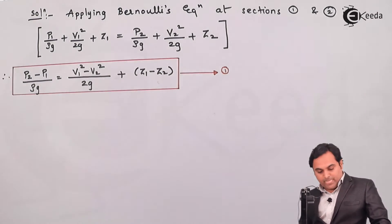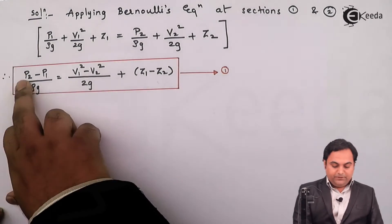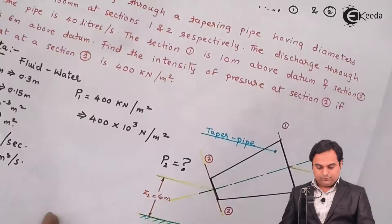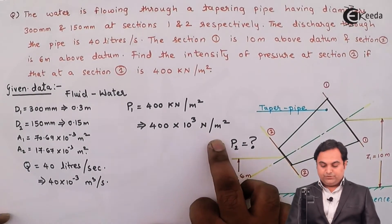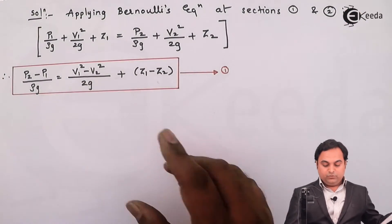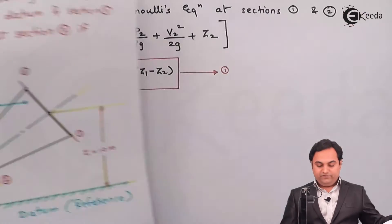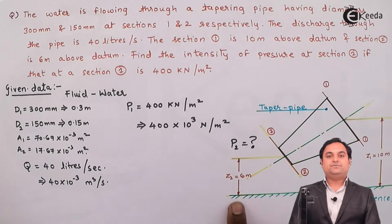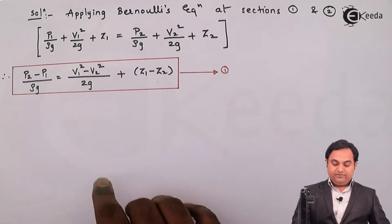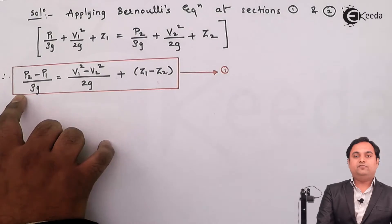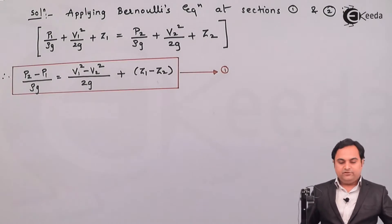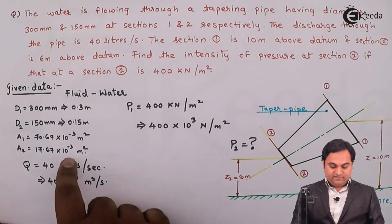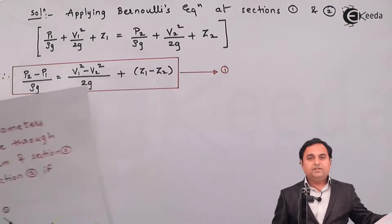I'll be keeping this as equation number 1. Here we have to find P2. P1 is given as 400 into 10 raise to 3 Newton per meter square. Out of V1, V2, we don't have any values, so V1 V2 are unknown. For Z1 Z2, Z1 is given as 10 meter, Z2 is 6 meter, these values are known. So it is understood that we have to find the velocities first to get the value of P2. We have to find V1 V2 first, and that can be found out from the discharge which is given. Since areas are known, I can use continuity equation.